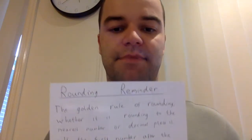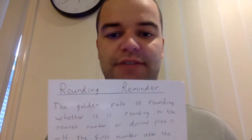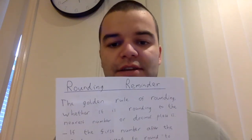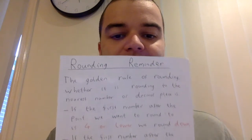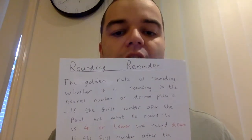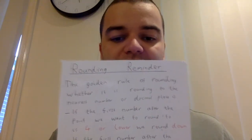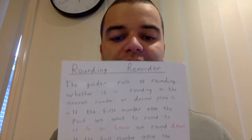So just as a reminder, the golden rule for rounding, whether it's to a whole number or to a nearest decimal place, is that if the first number after the point that you want to round to is four or lower, you round down.